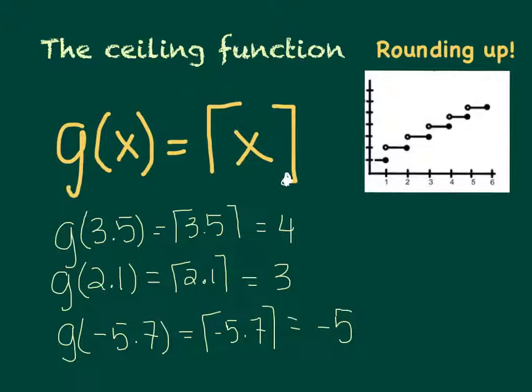So for example, if g of x is my ceiling function, if I plug in 3.5, I would write it as the vertical lines with the hat on the top with 3.5 in there, and that would be 4, because 4 is the next biggest integer after 3.5. This time, we'll go straight to the graph and look at that. So 3.5 right here, you go up, you can see that we're at the y value of 4 there.